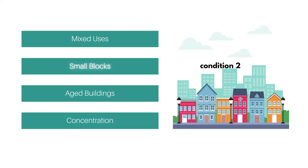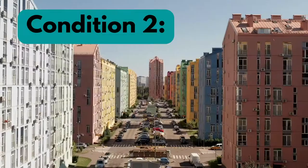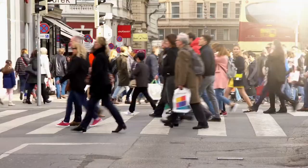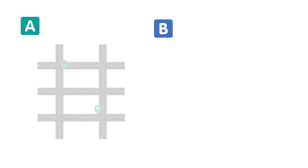Her second criteria is the need for small blocks. Condition 2: most blocks must be short. That is, streets and opportunities to turn corners must be frequent. Shorter blocks mean that people can reach their destinations in a shorter amount of time, and they have more options for reaching their destinations.